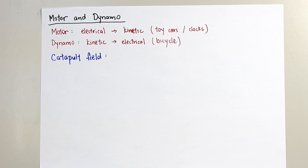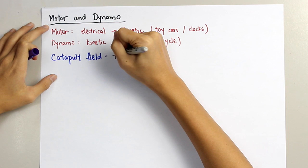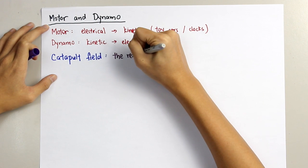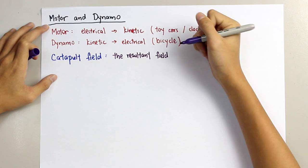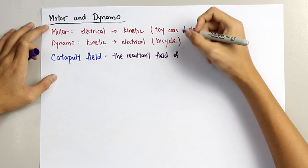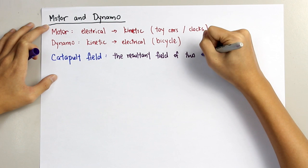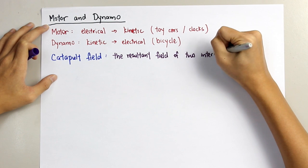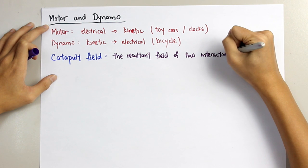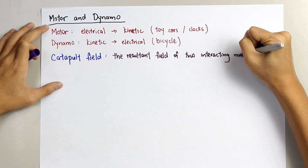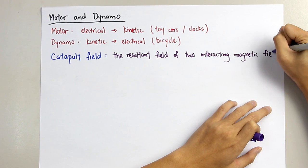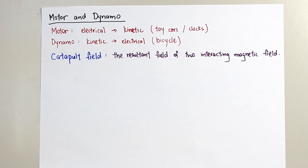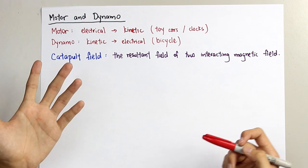A catapult field is the resultant field of two interacting magnetic fields. The two magnetic fields we mention here — what are they?